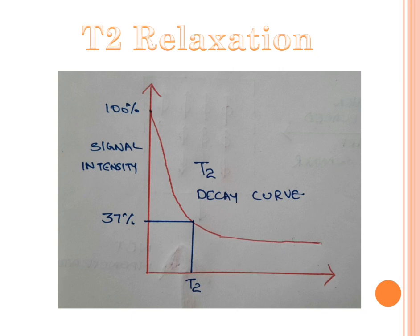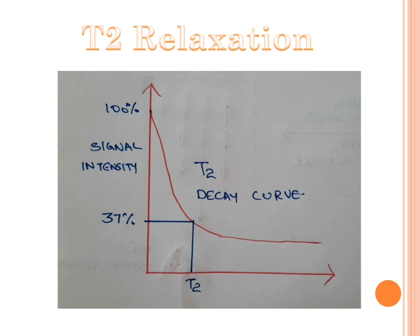T2 relaxation refers to the decrease in transverse magnetization upon withdrawal of the RF pulse. While T1 relaxation is the increase in longitudinal magnetization, T2 relaxation is the decrease in magnetization along the Y axis. Since T2 relaxation is a decrease in transverse magnetization, it produces a decaying graph known as the T2 decay curve. The T2 relaxation time is the time taken for the transverse magnetization to decrease from 100% to 37%.